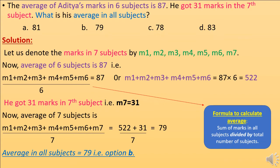He got 31 marks in the 7th subject, so M7 equals 31. The average of 7 subjects is (M1 + M2 + M3 + M4 + M5 + M6 + M7) divided by 7, which equals (522 + 31) divided by 7, equals 553 divided by 7, equals 79. So the average in all subjects is 79, which is option B.